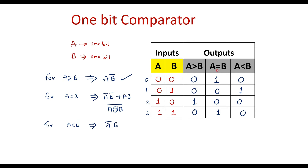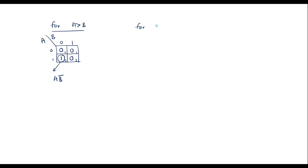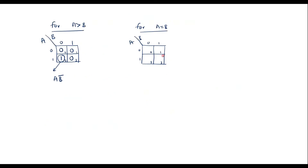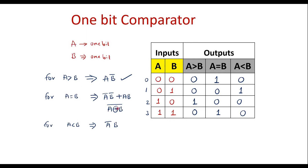Now let me take the K-map for a equal to b. Drawing the same two-variable K-map with cells 0, 1, 2, 3: the output is high for cell 0 and cell 3. So we write 1 in cell 0 and cell 3, and 0 in the others. We cannot form a pair, so we take them individually. Cell 0 corresponds to ā·b̄ and cell 3 corresponds to a·b. Together this gives ā·b̄ + a·b, which is a XNOR b. So for a equal to b, we confirm the expression is a XNOR b.